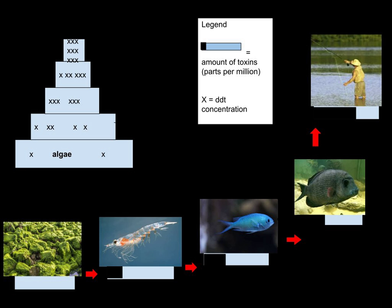Biological magnification often refers to the process whereby certain substances such as pesticides or heavy metals work their way into lakes, rivers, and the ocean, and then move up the food chain in progressively greater concentrations as they are incorporated into the diet of aquatic organisms such as zooplankton, which in turn are eaten perhaps by fish, which then may be eaten by bigger fish, large birds, animals, or humans.